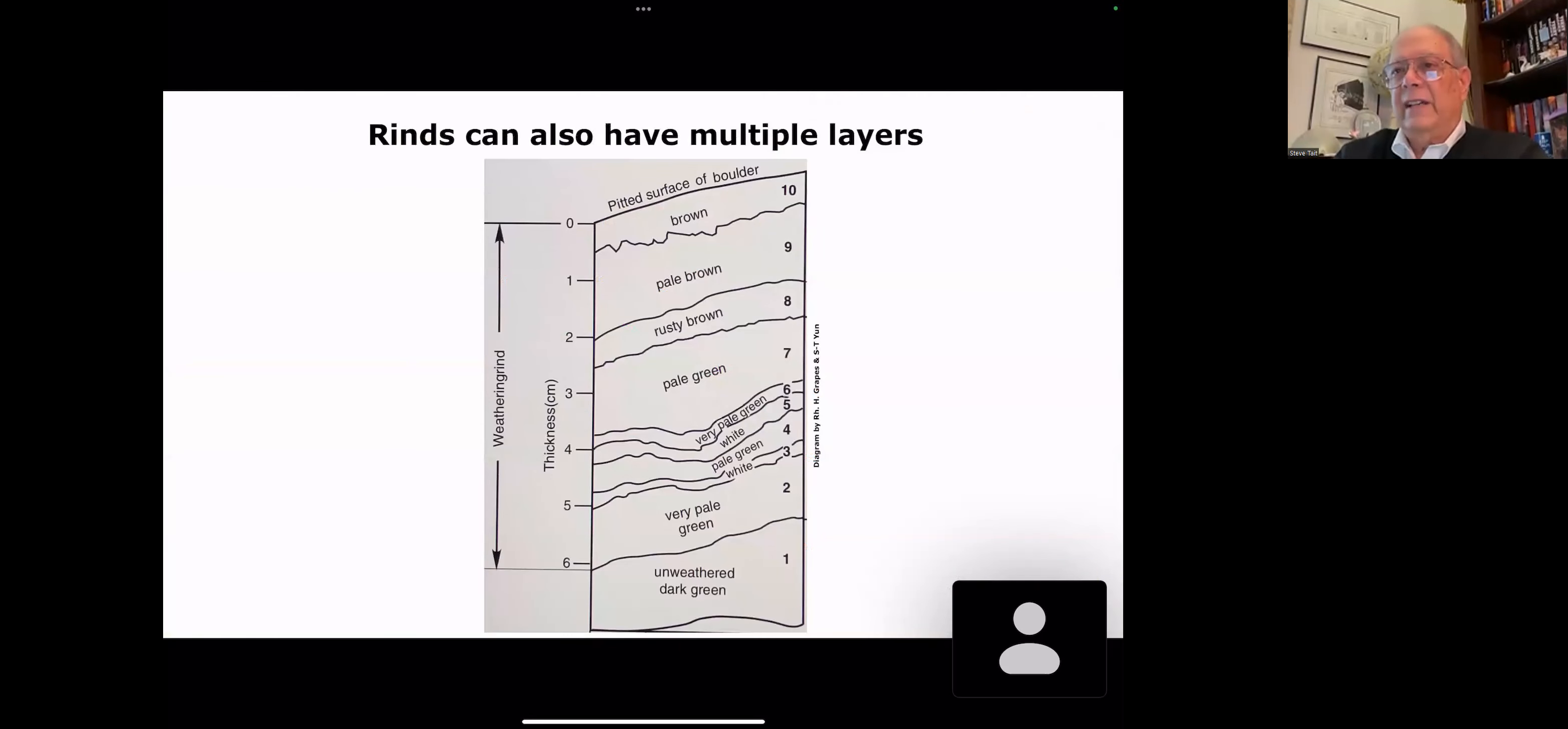Rinds can also have multiple layers. This is a New Zealand nephrite. This is a very old rind, about 6.3 centimeters thick. They show the first layer is the unweathered stone, and then the tenth layer at the surface is a brown colored patina.